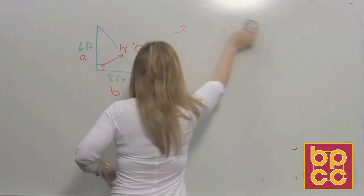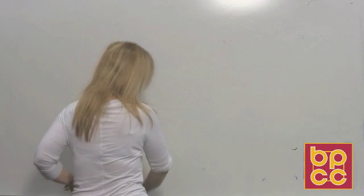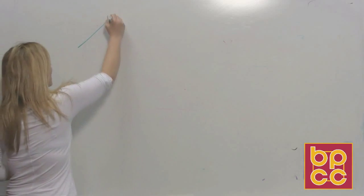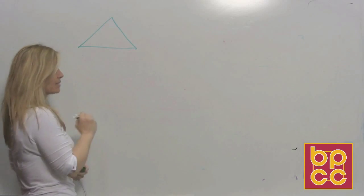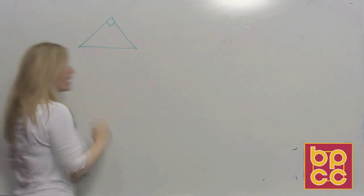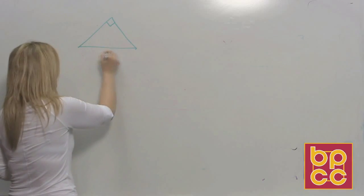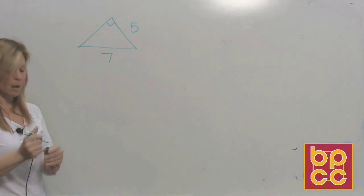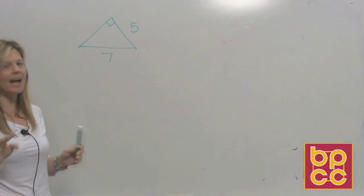So again, what shape are we dealing with? We're dealing with a right triangle. How do we know it's a right triangle? We're looking at the shape. So if you look at example three, we have the triangle. It's kind of slanted. There's the right angle. We have this side labeled 7 and this side labeled 5.